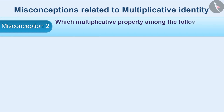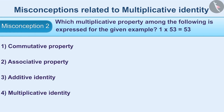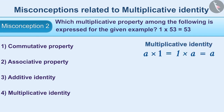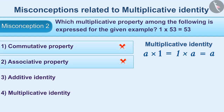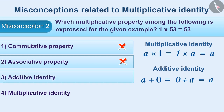Misconception 2: Choose the correct property among the following for the given example — 1 multiplied by 53 equals 53. Due to lack of proper understanding of multiplicative identity, option 1 and option 2 are chosen as answers, but they are incorrect. Getting confused between additive identity and multiplicative identity, option 3 is given as an answer — this is also incorrect.